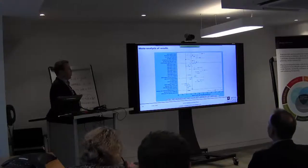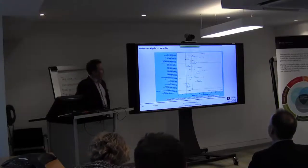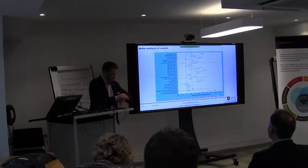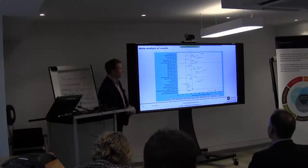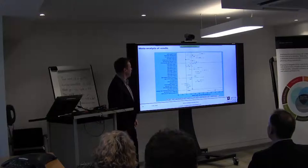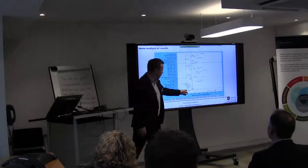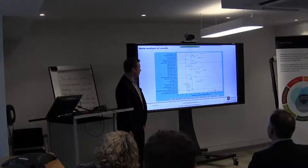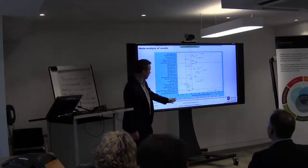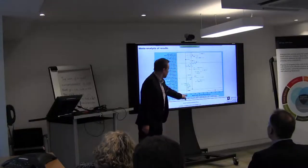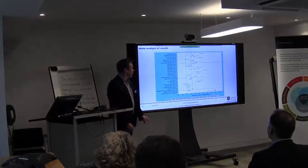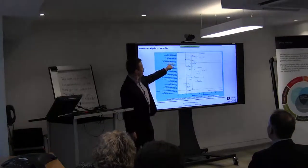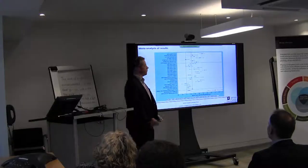We put all of this together to produce a meta-analysis of results. There's quite a lot of information in the figure. We've got a total of 25 water efficiency schemes down the left-hand side, and then the mean water saving in litres per property per day on the x-axis. It's important to note that zero is marked on the axis.